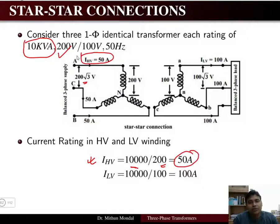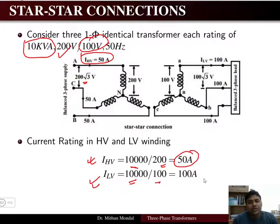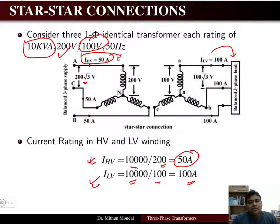On the low-voltage winding, the current rating is 10 kVA divided by 100 V, giving 100 amperes on the low-voltage side. So 100 amperes is delivered to the load, and 50 amperes is taken from the supply.